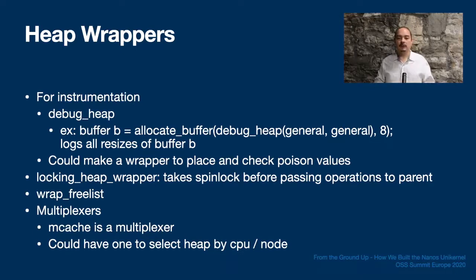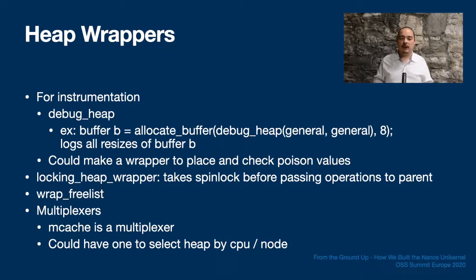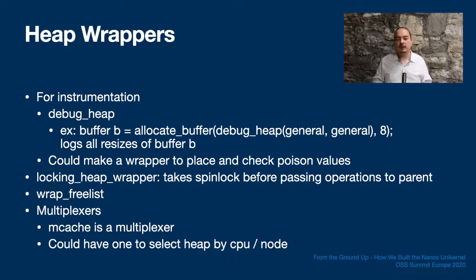We have some other container-type heaps which simply wrap access to another heap. These wrappers make it possible to augment a heap's behavior without rewriting it, and they're great to use during development and debugging. We have a debug wrapper which can log allocations from some heap, a heap wrapper that can place and check poison values around allocations, and a locking wrapper which simply holds a spin lock while handing calls off to a parent heap. We use this locking wrapper to serve allocations that might be made or released outside of the kernel lock, such as during deferred processing scheduled on behalf of a device interrupt.